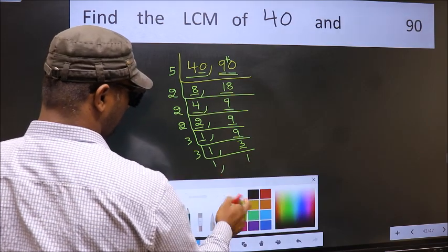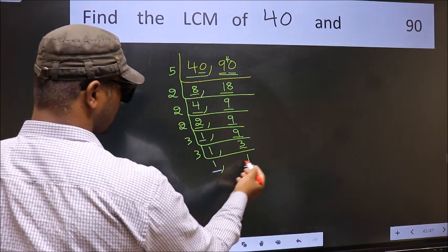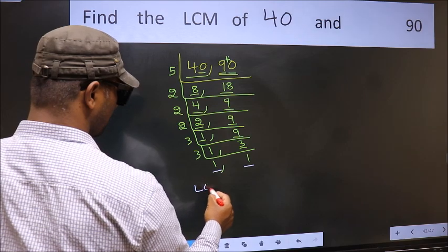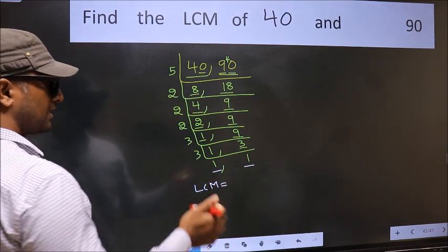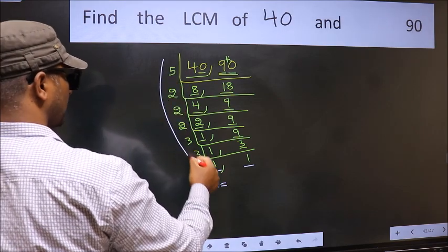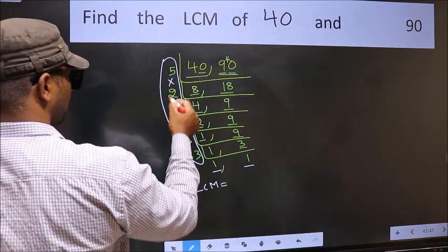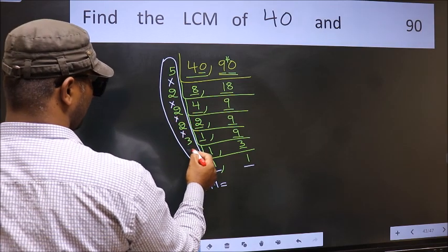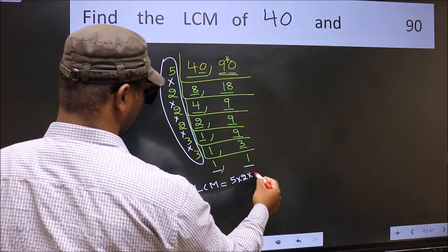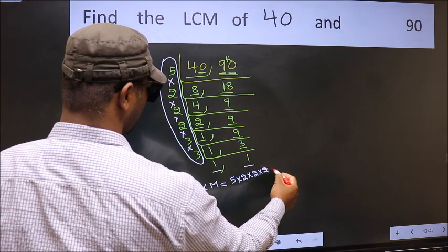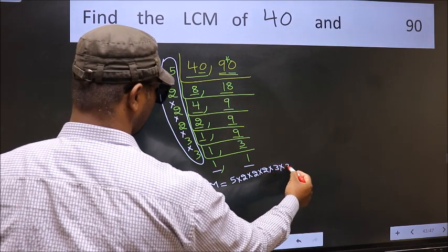So we got 1 in both the places. So our LCM is the product of these numbers. That is 5 into 2, into 2, into 2, into 3, into 3.